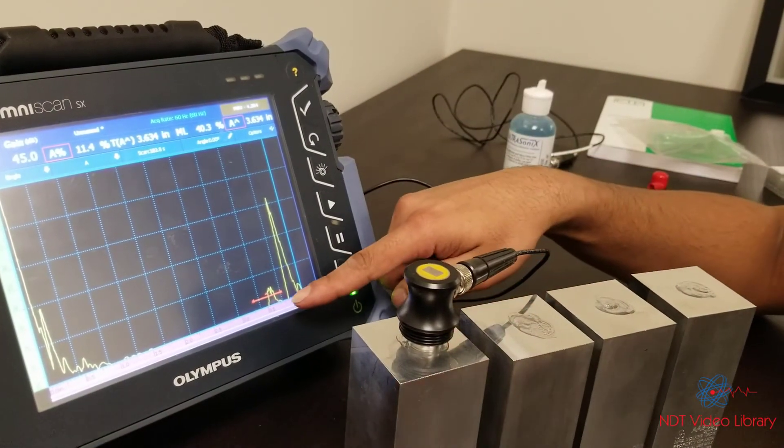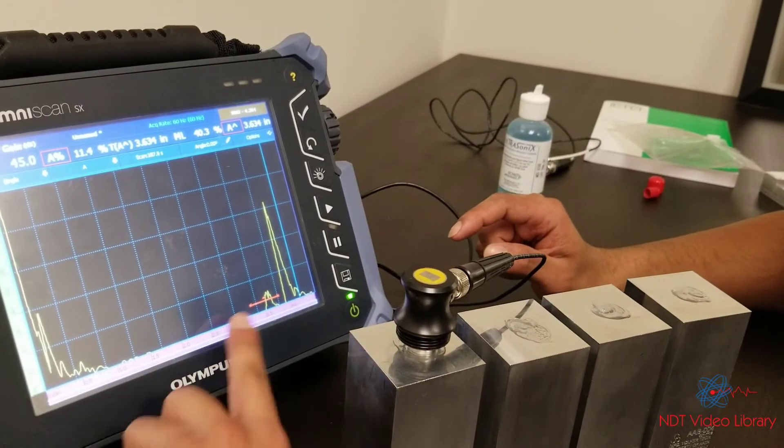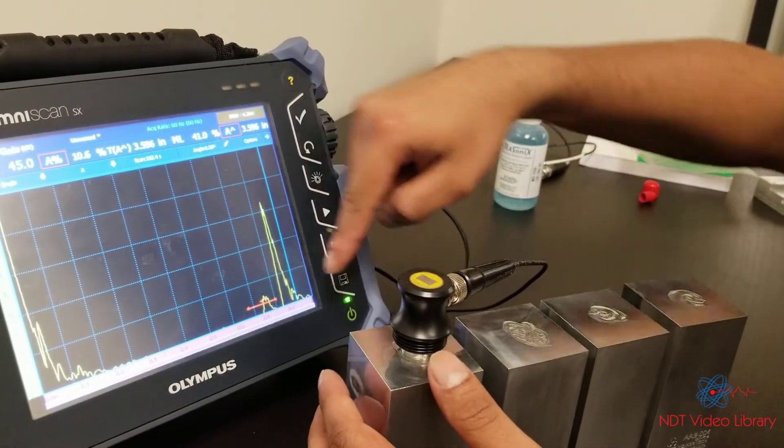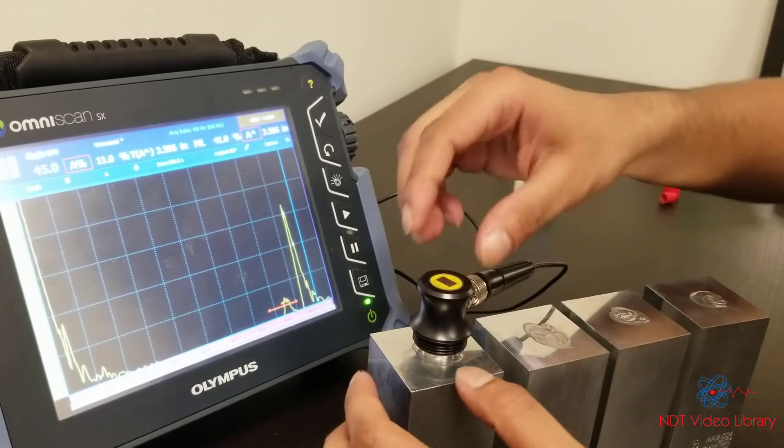Now, since they're at the same depth from the top surface, they're going to be at the same distance from your zero. This is zero. So the holes are going to pop up at the same distance. The back wall is going to be at the same distance, but the amplitudes are going to change. Watch this.